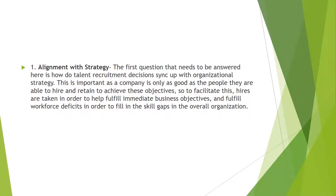In organizations and companies today, there are five key factors that HR and talent management departments really need to take into account in today's global business environment when it comes to conducting global talent management. The first is alignment with strategy. The first question that needs to be answered is how do talent recruitment decisions sync up with the organizational strategy?